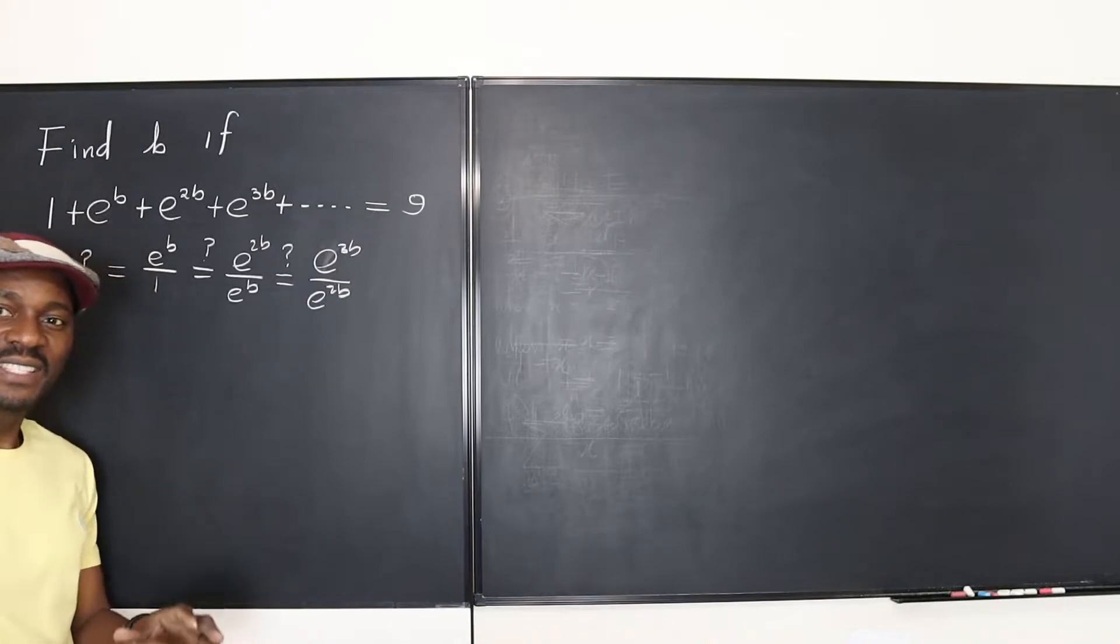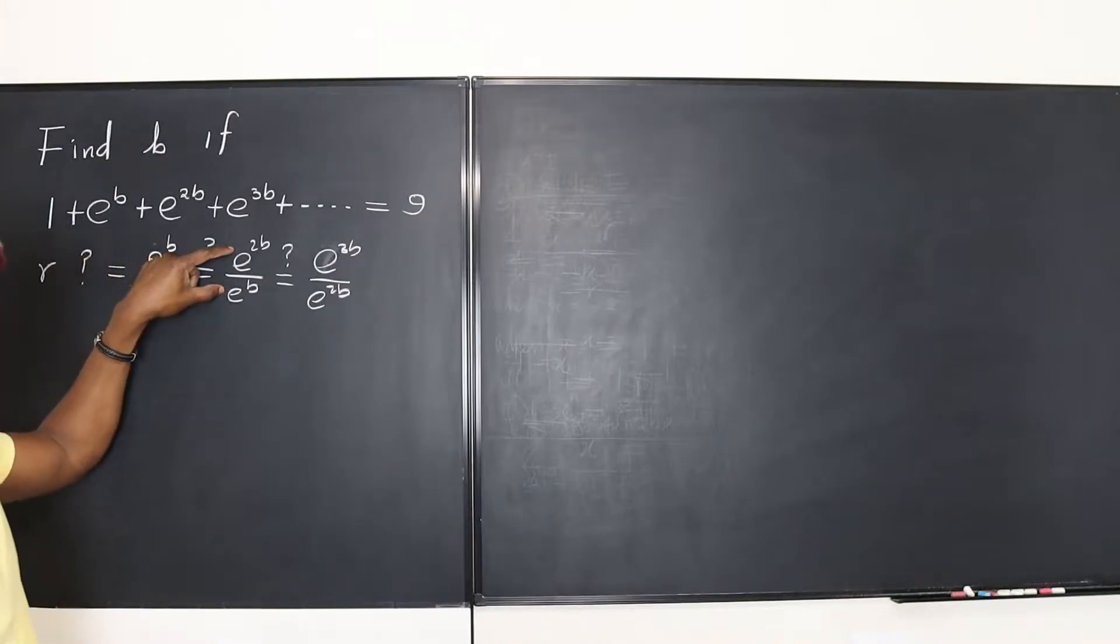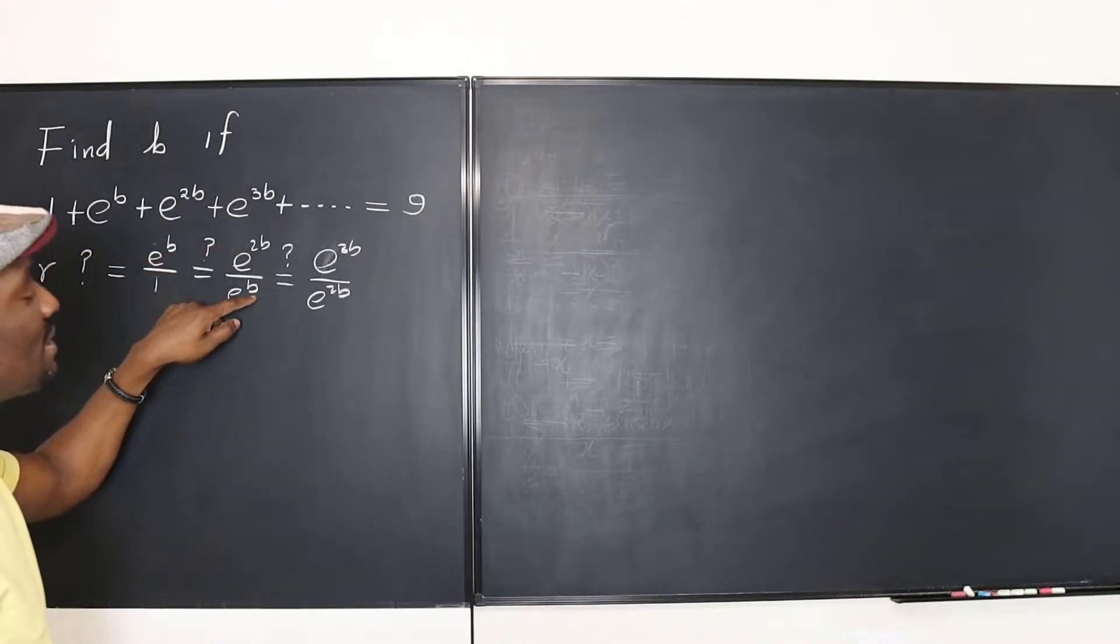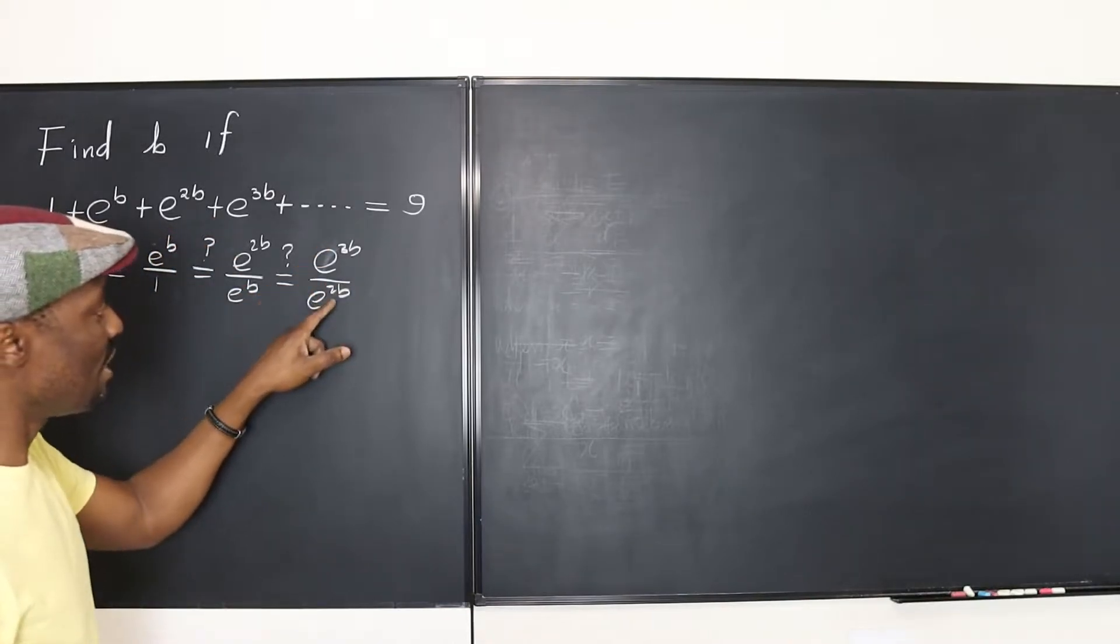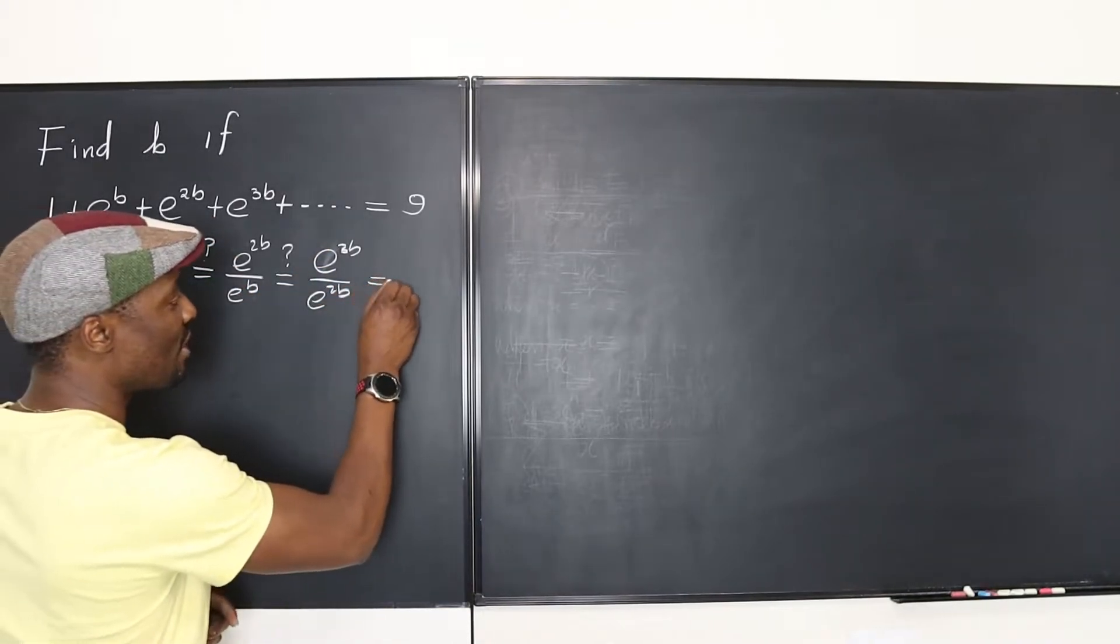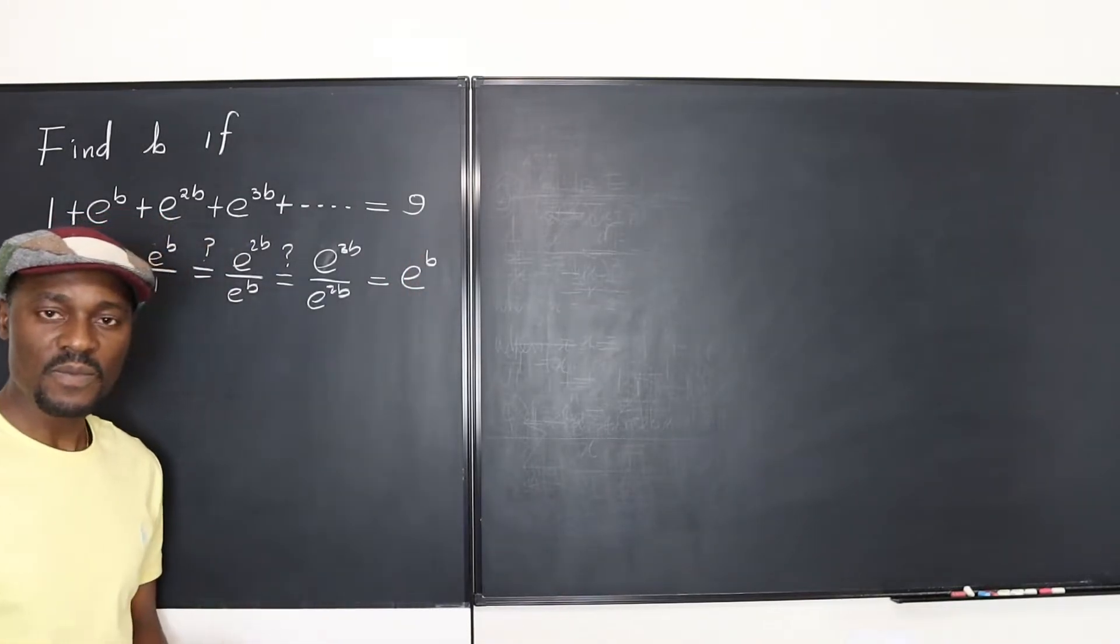And the answer is, in this case, yes. Every time you divide here, this gives you e to the b. This is e to the b. Applying the laws of exponents, 2b minus b gives you b. So we have e to the b. Here the ratio is also e to the b. So we have a common ratio of e to the b.